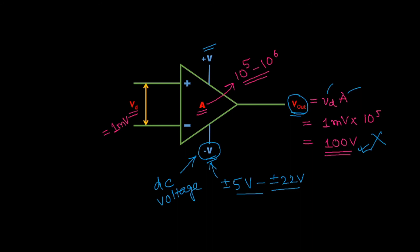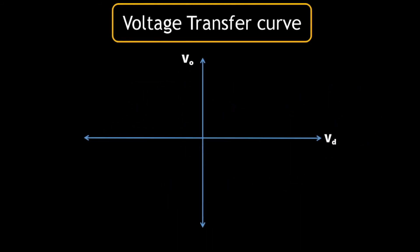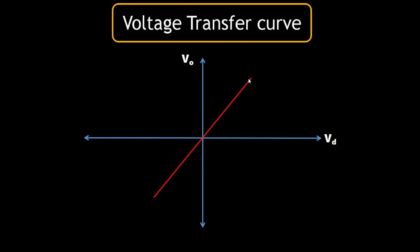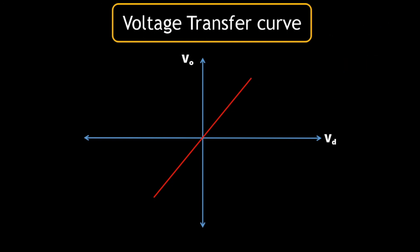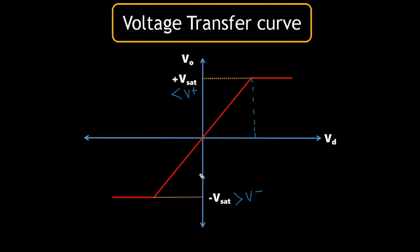This becomes clearer with the voltage transfer curve, which is plotted between V0 (output voltage) and Vd (differential voltage). Since V0 = A × Vd, V0 is directly proportional to Vd, giving a linear curve whose slope equals the gain A. However, the output saturates at a voltage called Vsat, where Vsat < V+ and −Vsat > V−. This saturation region represents the maximum output the op-amp can achieve.